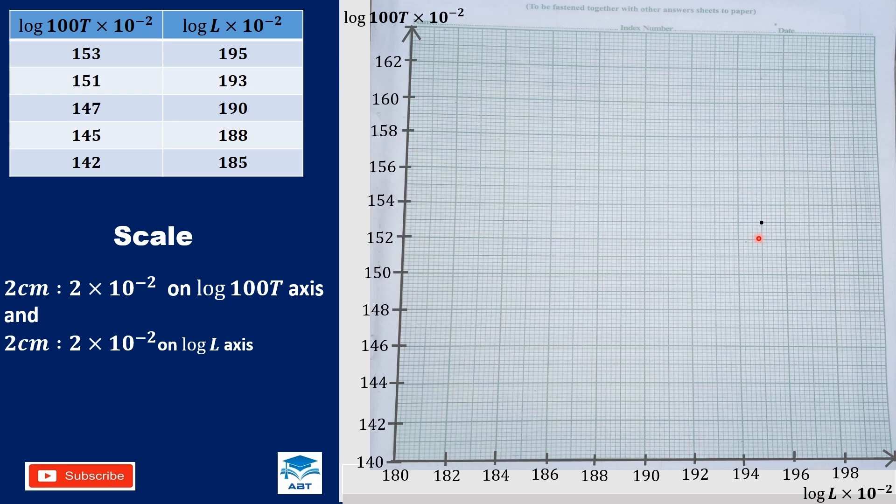The next one, 1, 5, 1 on the vertical axis is between 1, 5, 0 and 1, 5, 2. And then 1, 9, 3 will be between 1, 9, 2 and 1, 9, 4 meeting here. The next one, 1, 4, 7 will be between 1, 4, 6 and 1, 4, 8, and 1, 9, 0 will meet here.